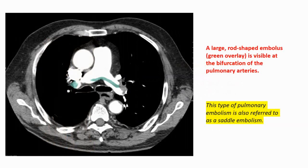This is a classical chest X-ray for saddle embolism. Saddle embolism is a type of pulmonary embolism. You can see a large rod-shaped embolus — shown with a green overlay — visible at the bifurcation of the pulmonary arteries. This is a classic saddle embolism.